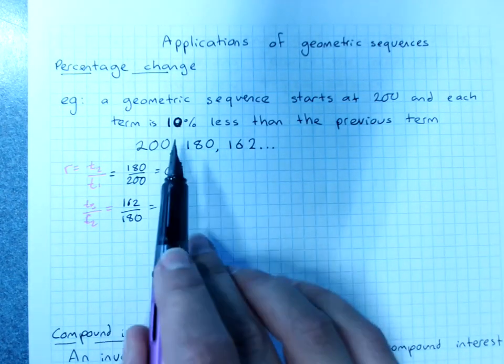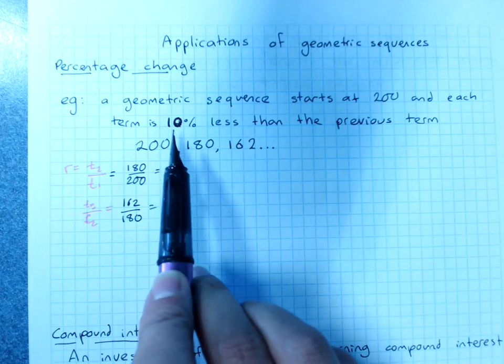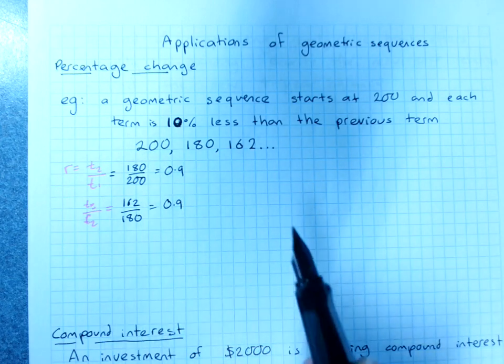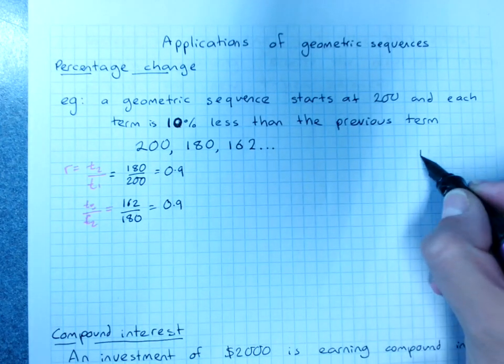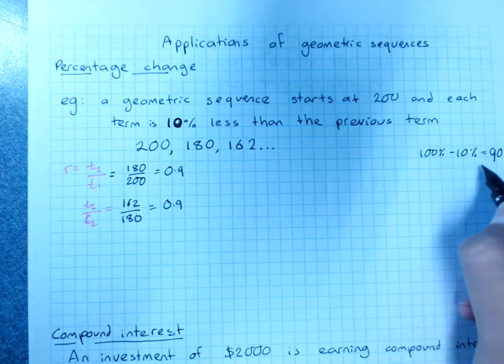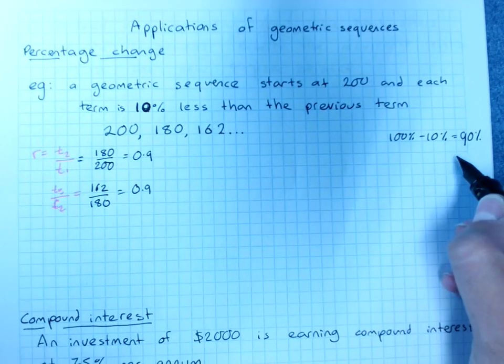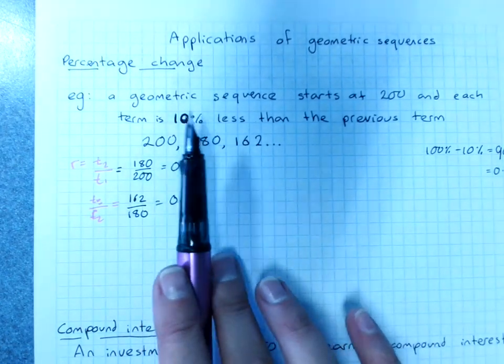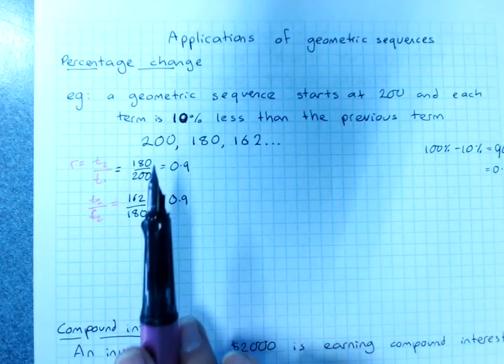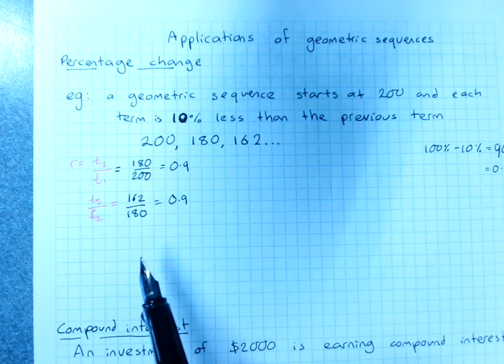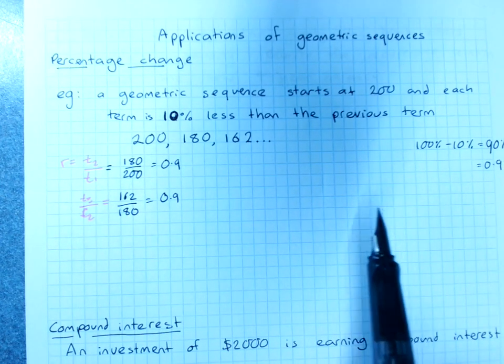0.9. And if you're feeling very clever, you'll notice that 10% less than an amount. If I had 100% minus 10%, I'd get 90%, and 90% as a decimal is 0.9. So the common ratio of a percentage change can be calculated by 1 plus or minus the percentage as a decimal. I'll write that down.